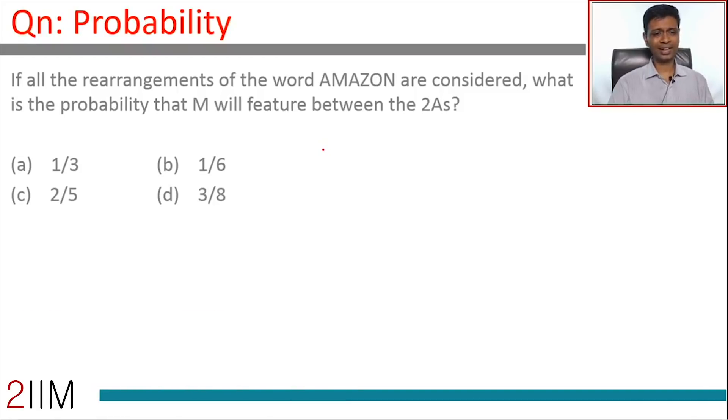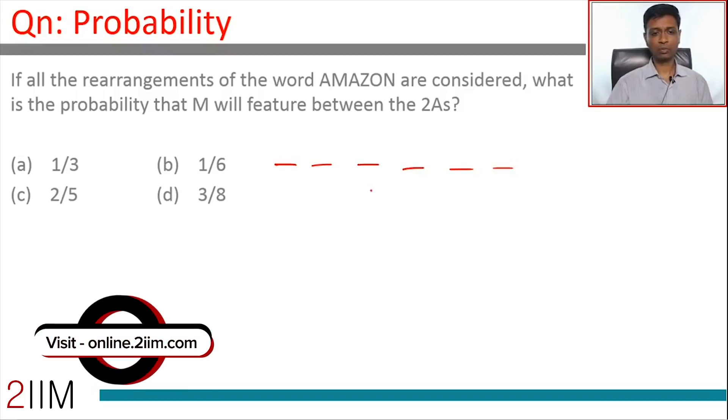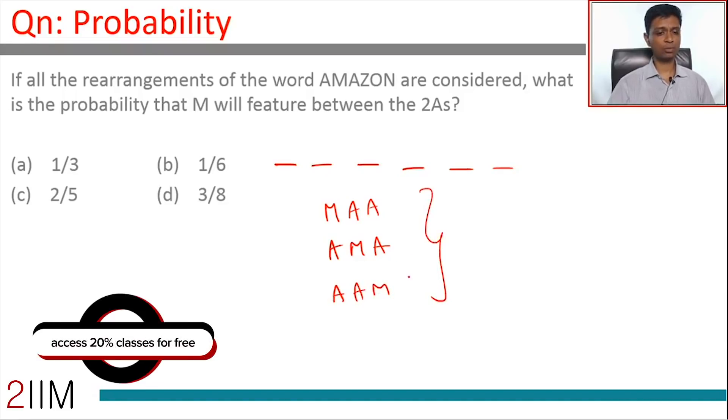I'm going to directly get to the answer. If you are considering six letter words, within that we are worrying about M and two A's. The M and two A's can be arranged as MAA, AMA, or AAM. Only this internal arrangement matters. In this case, M is between the two A's in only one arrangement. Answer is one by three. Done.